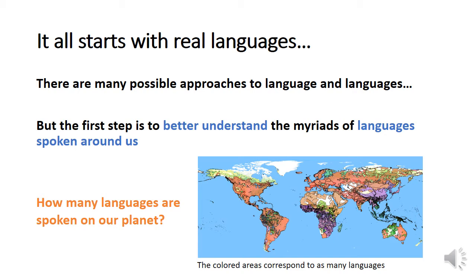And very obviously, just by looking at this map, you can see that there are quite many languages spoken on our planet. How many languages are spoken on our planet today? I can make three propositions: around 500 languages, around 6,000 languages, or around 25,000 languages. What is the right answer according to you?